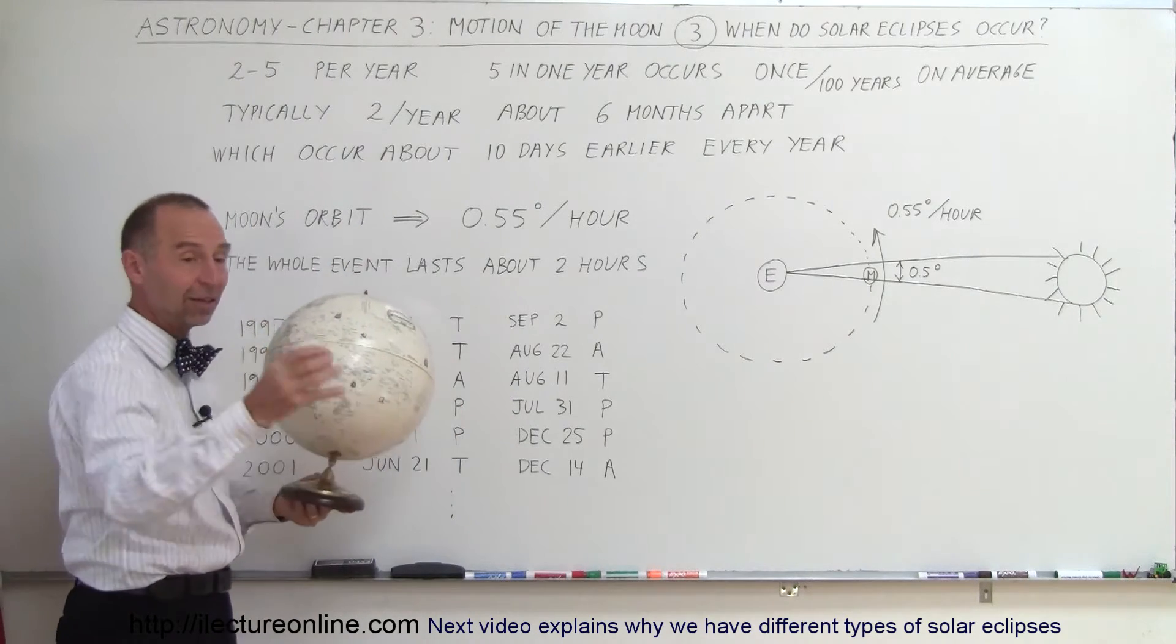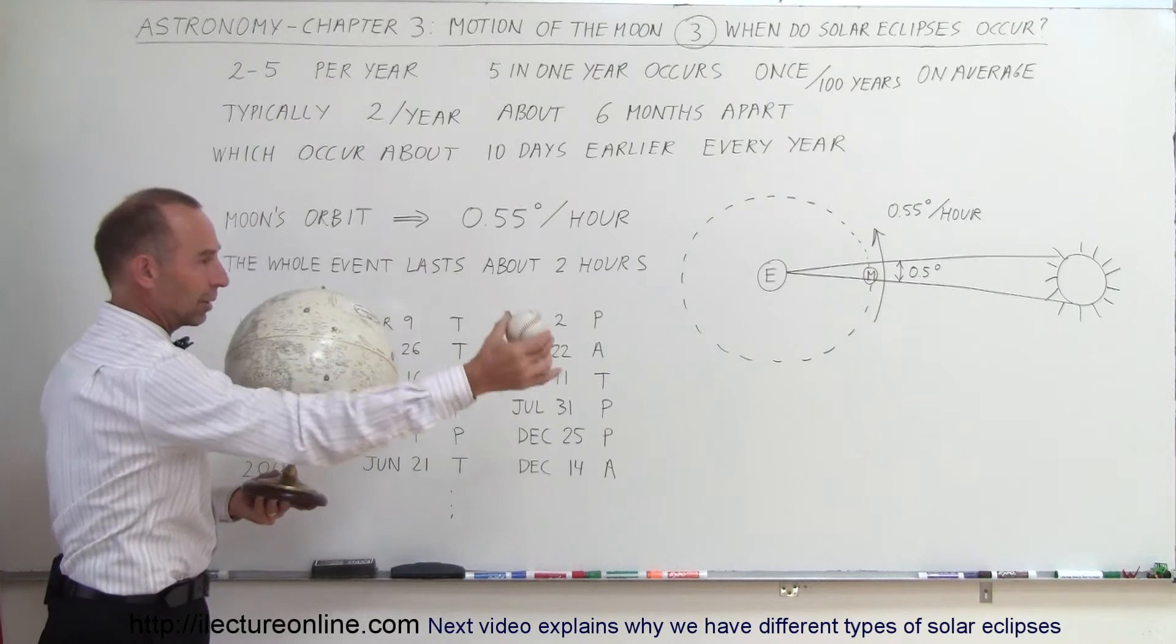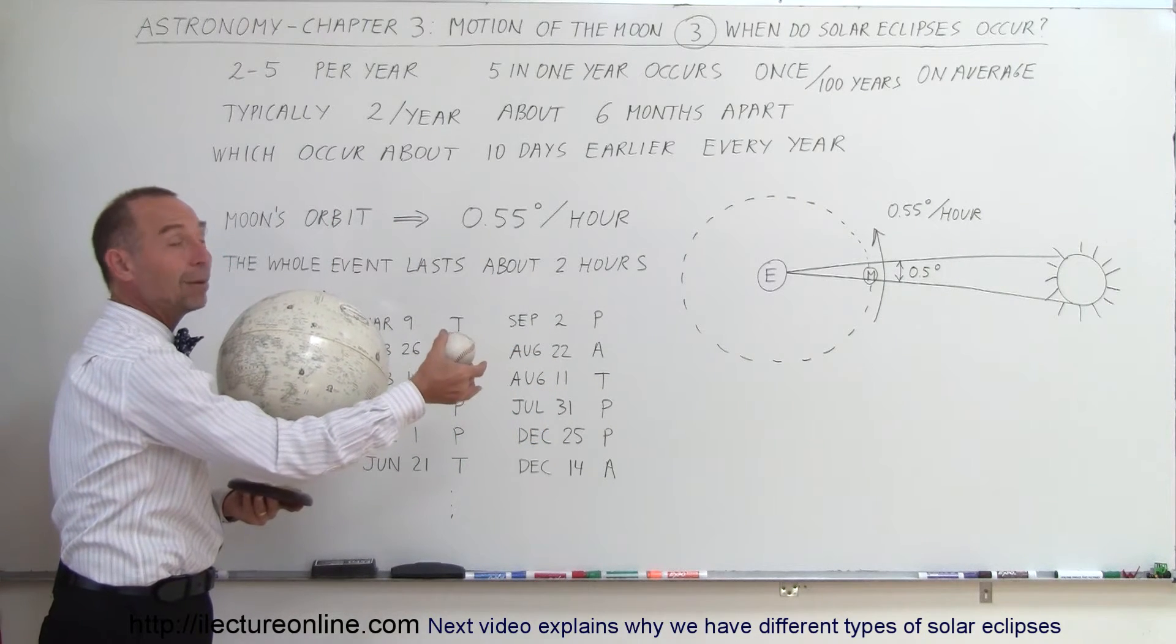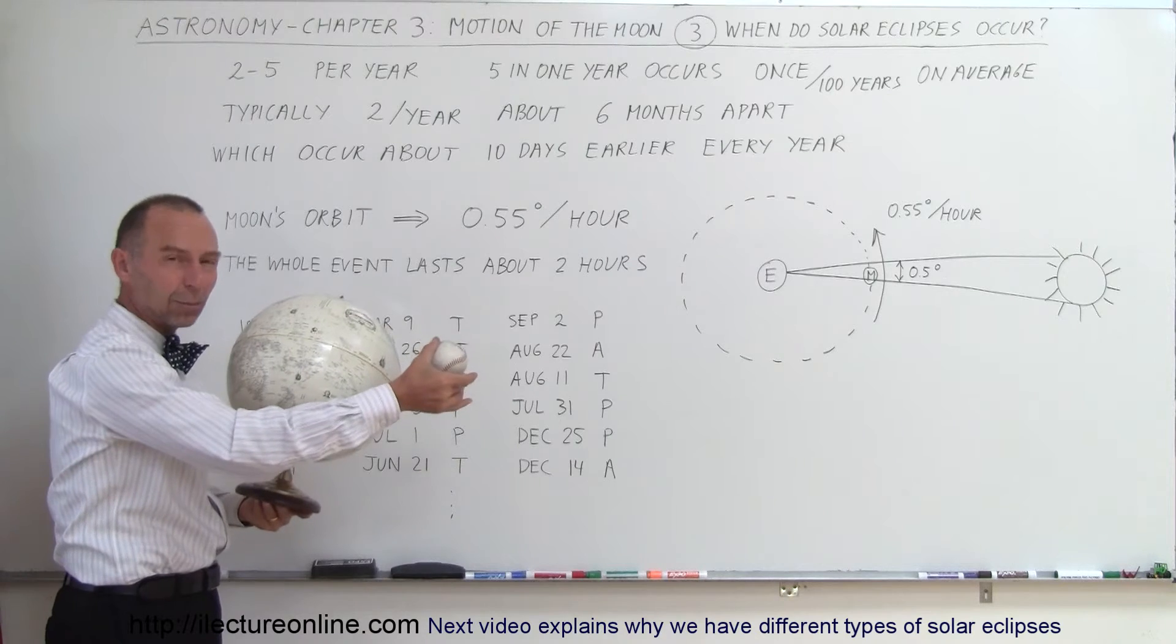Only twice during the orbit of the Moon around the Earth does it cut through the ecliptic plane. But most of the time when that happens, let's say the Sun is over here and it cuts through the ecliptic plane over there, there's no way that the Moon can be between the Earth and the Sun directly to block the light.